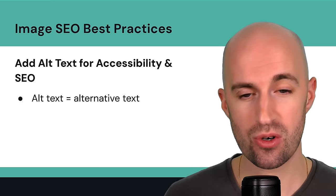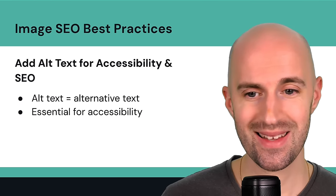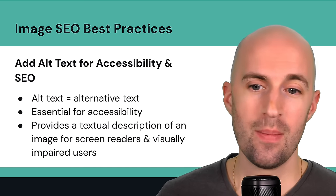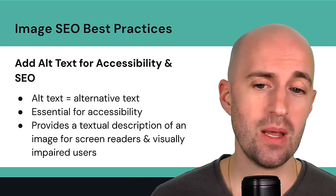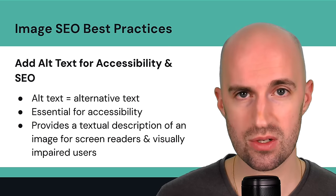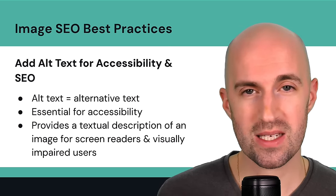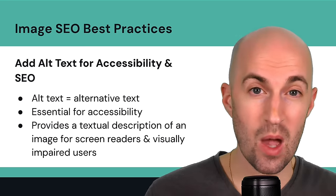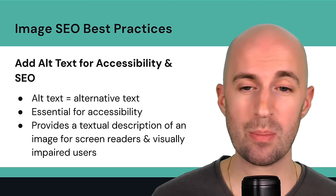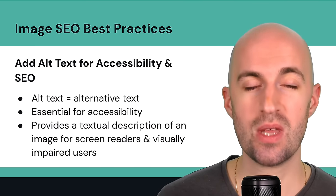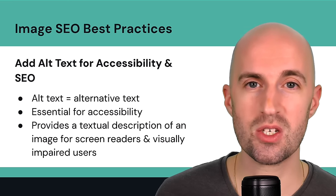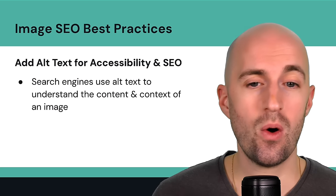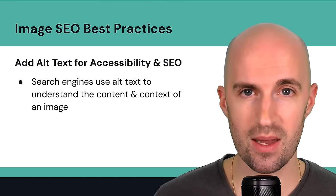Add alt text for accessibility and SEO. Alt text — short for alternative text — is an essential element for accessibility. It provides a textual description of an image for screen readers and visually impaired users. When a screen reader encounters an image on a website, it reads out the alt text so the person can visualize what that image is.